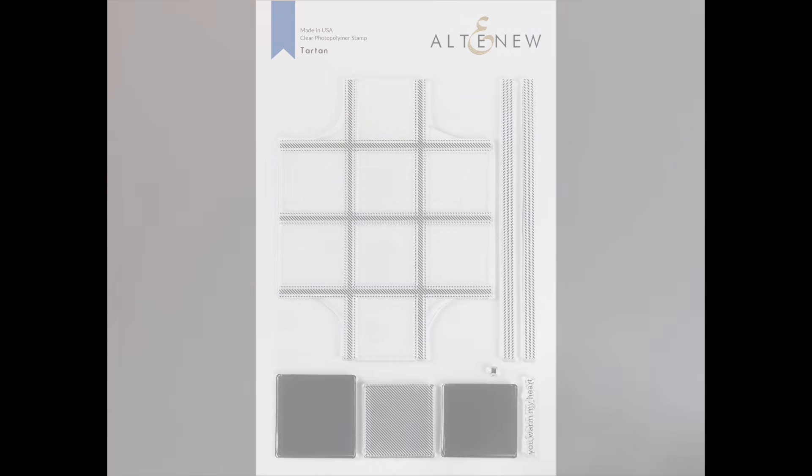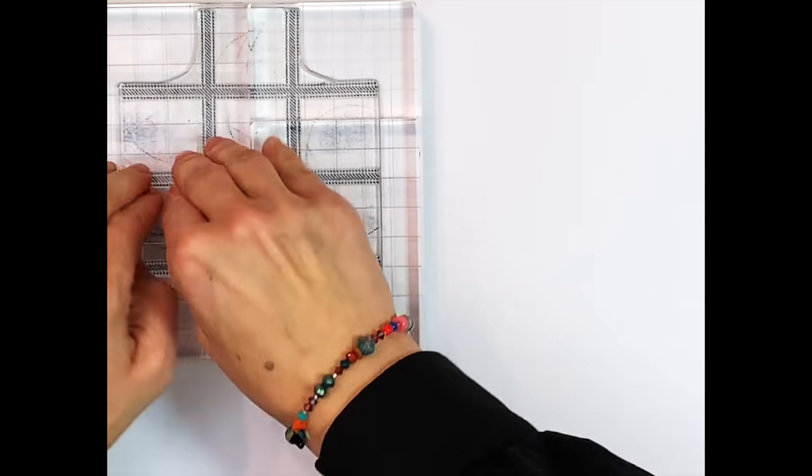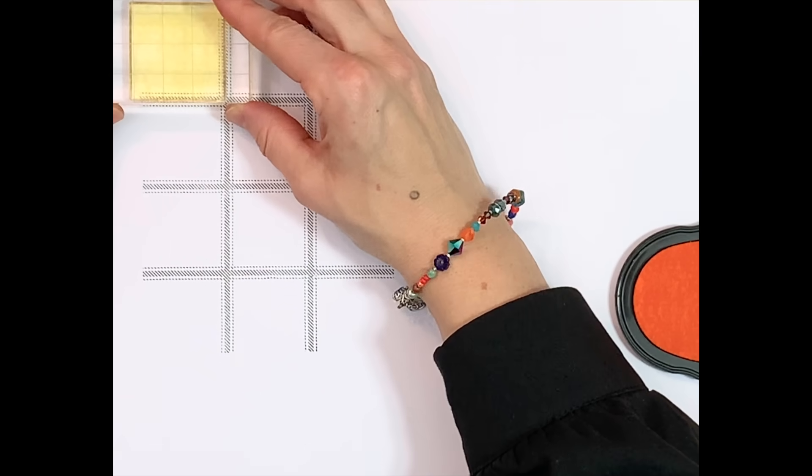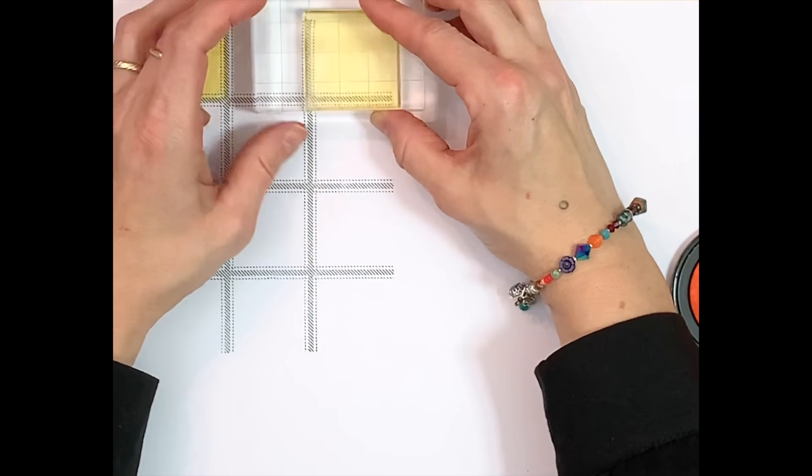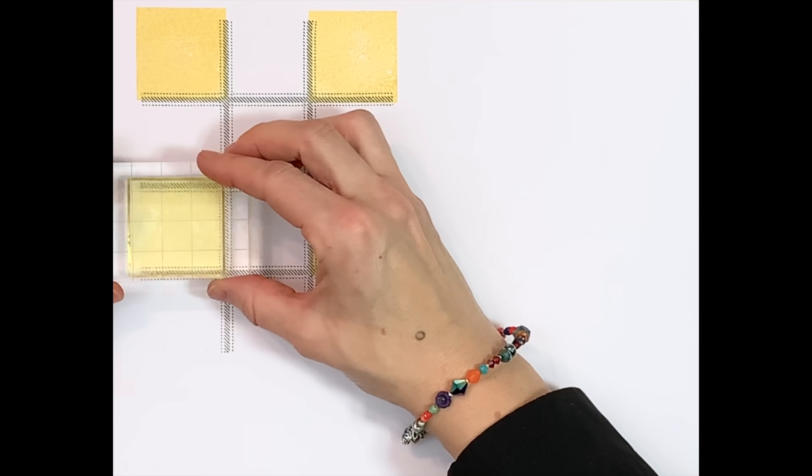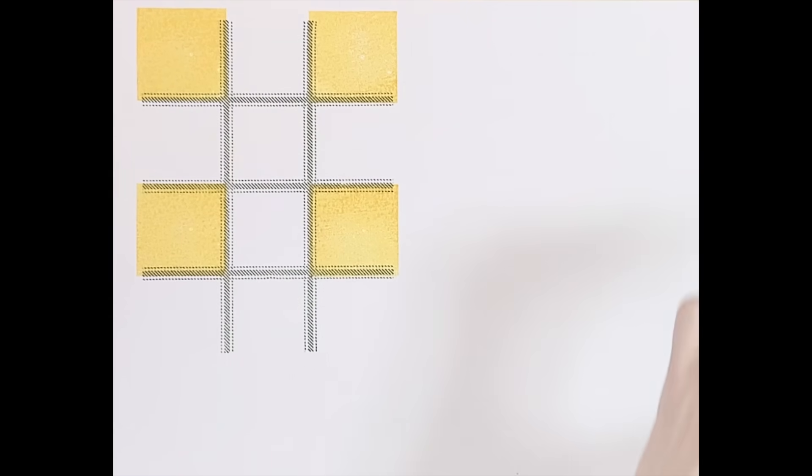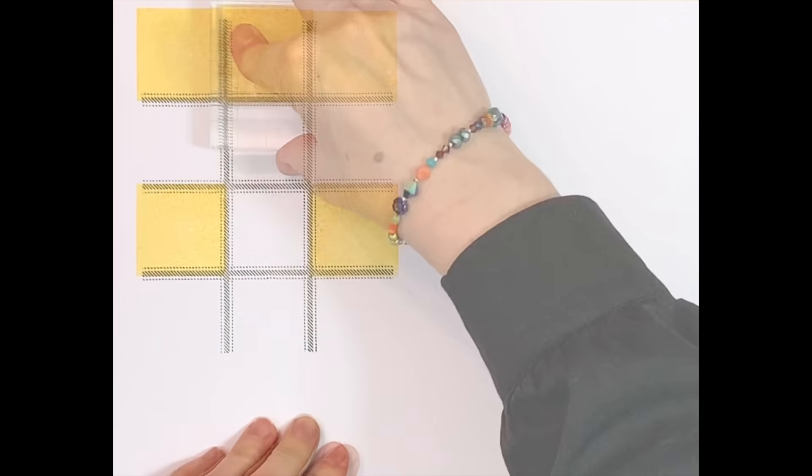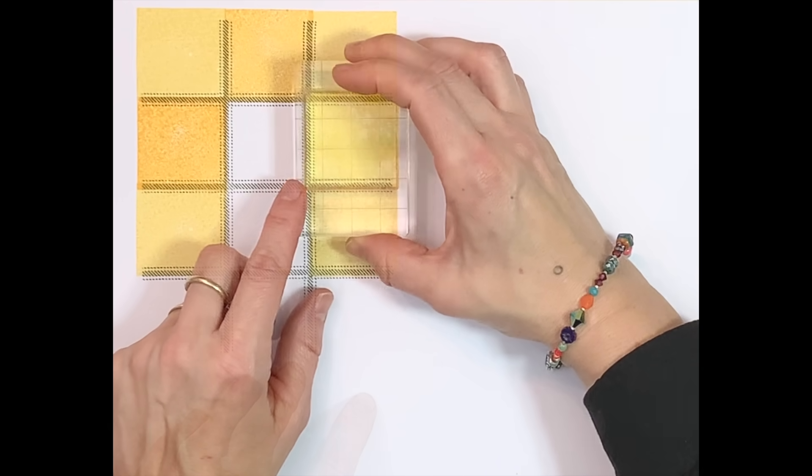This is tartan stamp set from Altenew. This is a 6x8 stamp set with 8 individual stamps. This stamp set features a 5.7 by 4.4 grid pattern stamp that has a threaded look with additional thread line stamps.